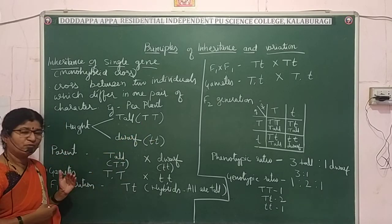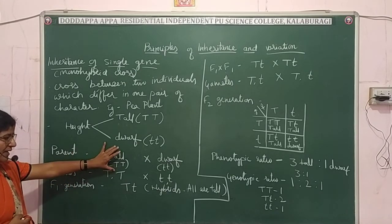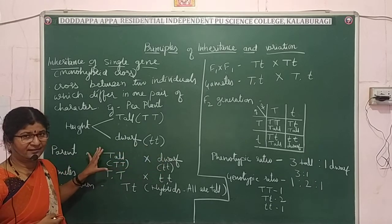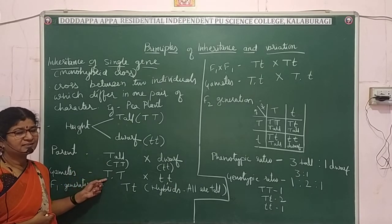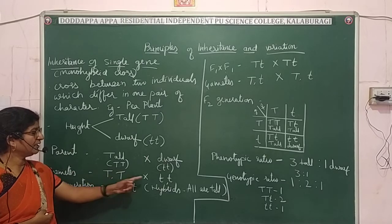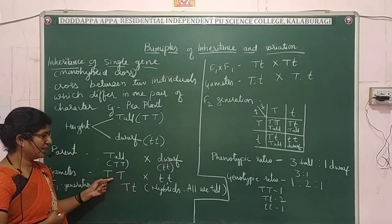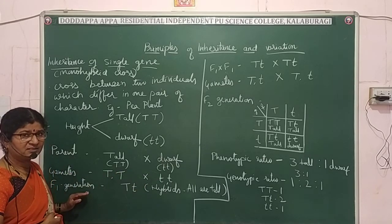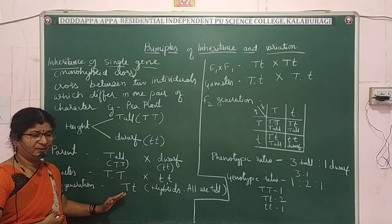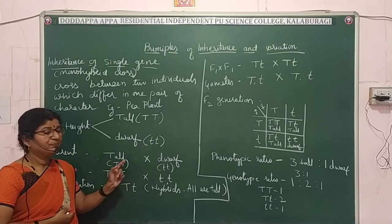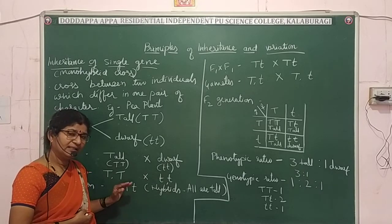First Mendel selected the pure line plants — a tall plant and a dwarf plant as parents. These parents produce gametes: pollen grains and ova. When cross pollination (hybridization) was done, in the F1 generation he got all tall plants. Even though they are hybrid, the dwarf character did not get expressed in the F1 generation.